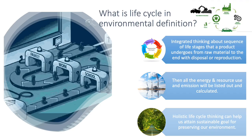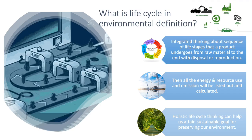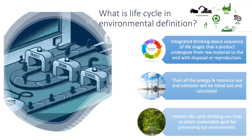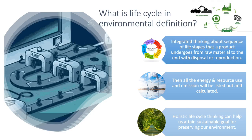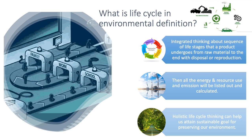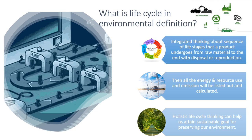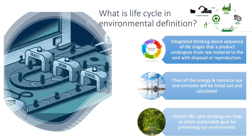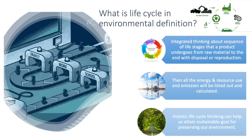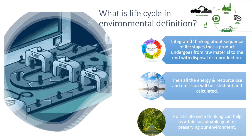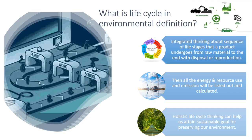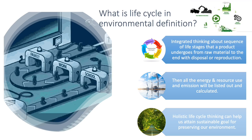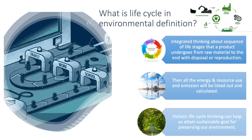Firstly, integrated thinking about the sequence of life stages that a product undergoes — from raw material to the end with disposal or reproduction. Then, all the energy and resource use and the emissions will be listed out and calculated accurately. Finally, holistic life cycle thinking can help us attain sustainable goals for preserving our environment.